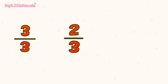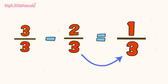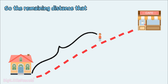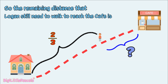So, three out of three minus two out of three. First, let's do three minus two, which gives us one. Then the bottom number three stays the same. So, the remaining distance that Logan still needs to walk to reach the cafe is one-third of the full trip.